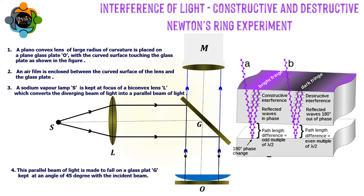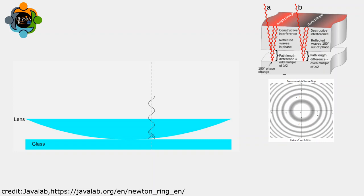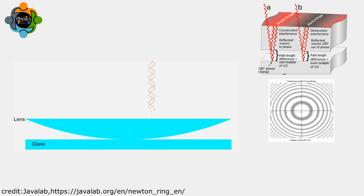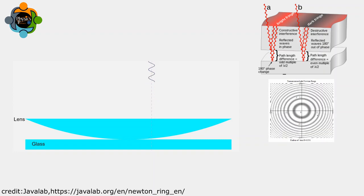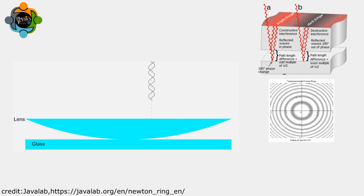these rings? Well, it all comes down to the phenomenon called interference. Light waves reflect off both surfaces of the lens and the glass. They then interfere constructively or destructively, generating the mesmerizing patterns we observe. In the lab, we